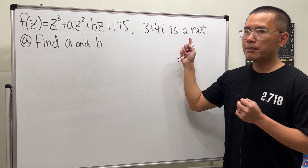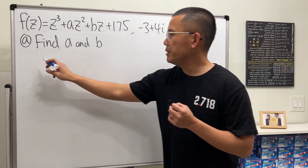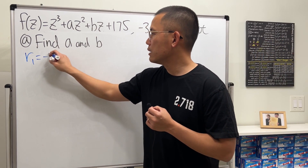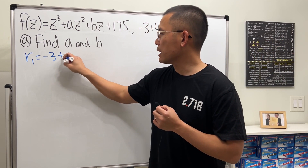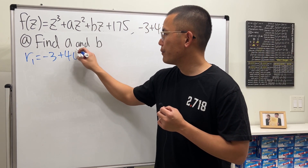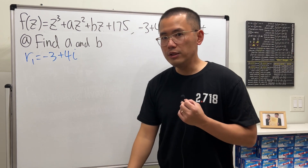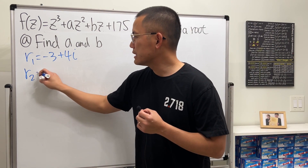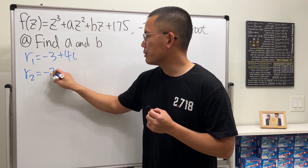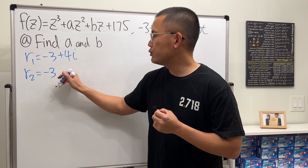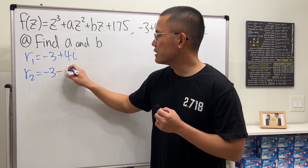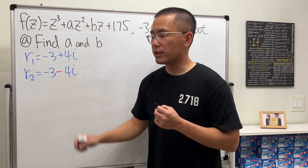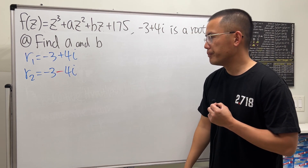One thing you have to know right away is that when we are given a complex root — let's call that r1, which is negative 3 plus 4i — its conjugate must be another root, meaning negative 3 minus 4i. I'll call that the second root r2.